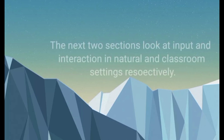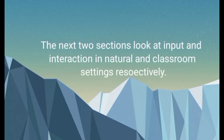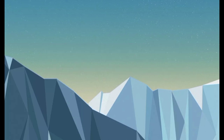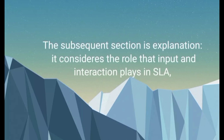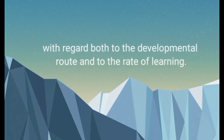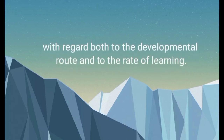The next two sections look at input and interaction in natural and classroom settings respectively. The aim is descriptive — to identify the major features that characterize the linguistic environment that learners are exposed to. The subsequent section on explanation considers the role that input and interaction play in SLA, with regard both to the developmental route and to the rate of learning.